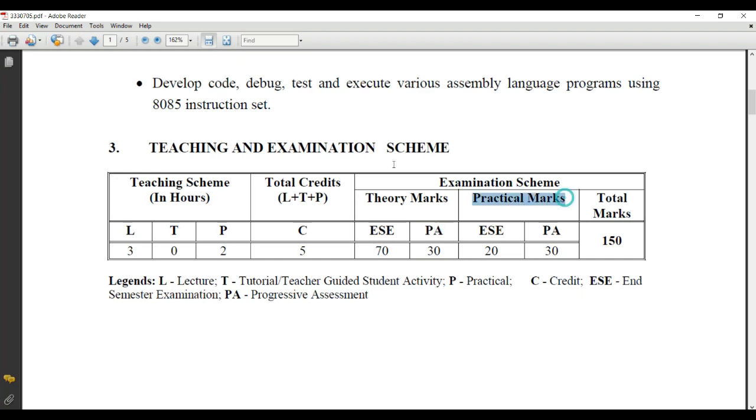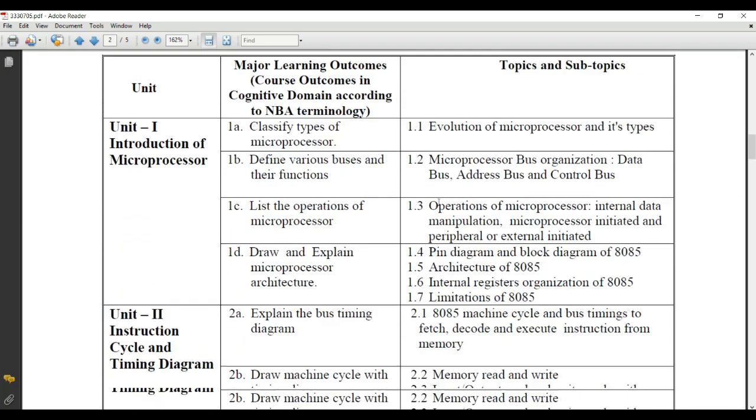Practical marks are again divided into two parts: ESE and PA. For ESE, the end semester examination, you will not have any external viva, so the viva is conducted by your internal faculty for 20 marks at the end of the semester. Progressive assessment of 30 marks includes your assignment marks, presentation marks, quiz marks, whatever the subject teacher decides.